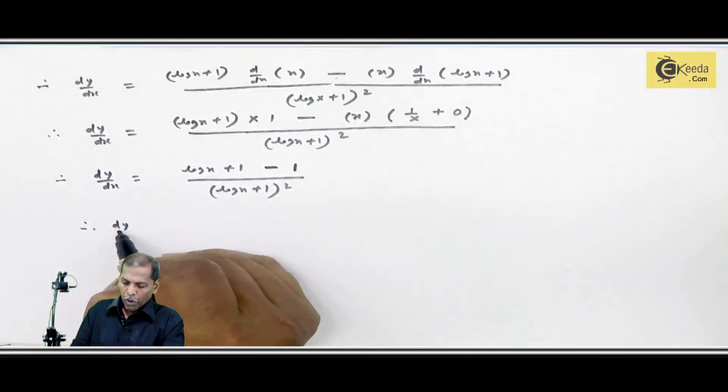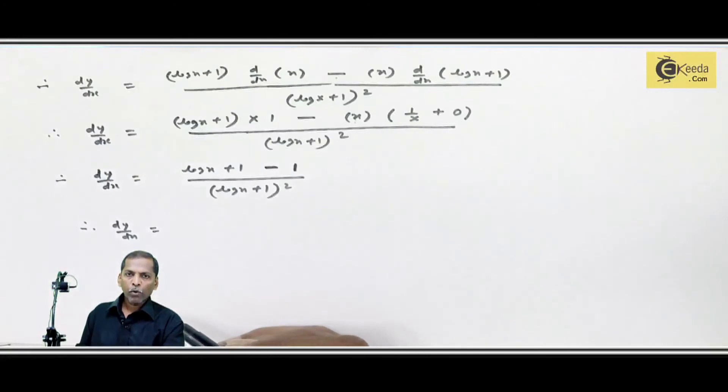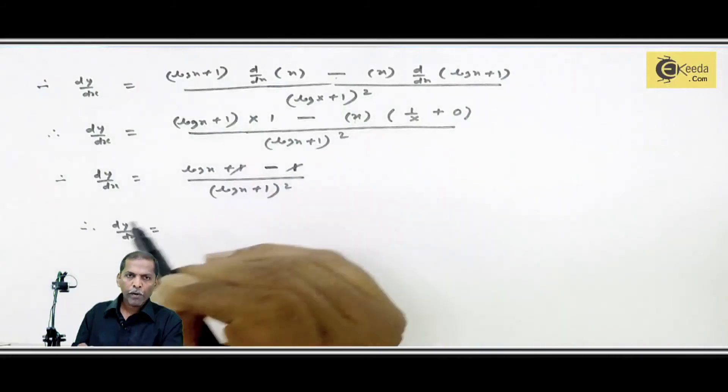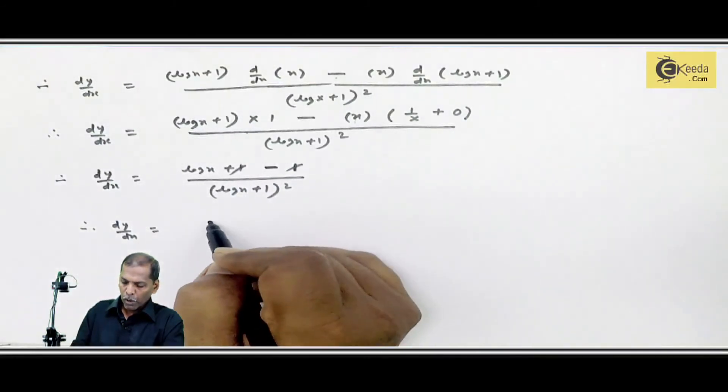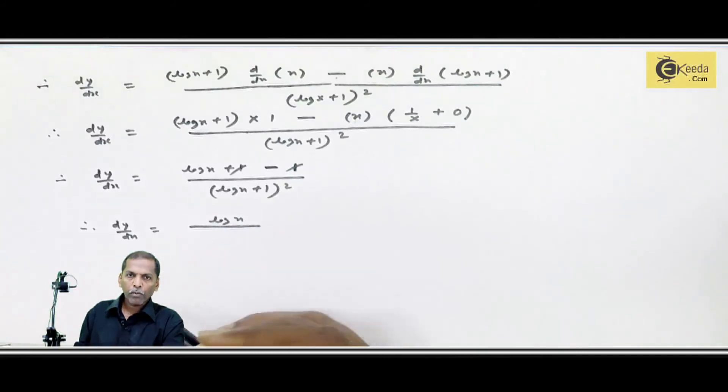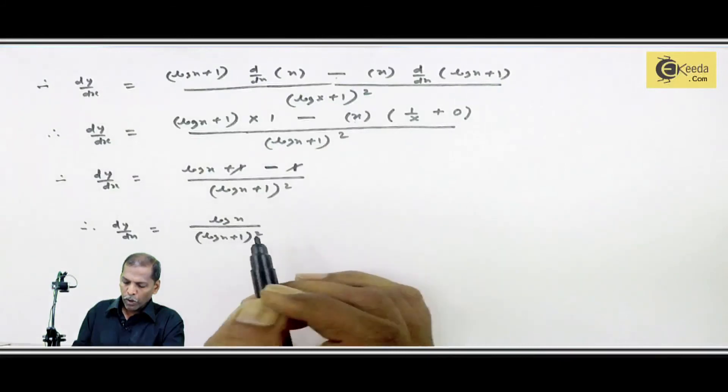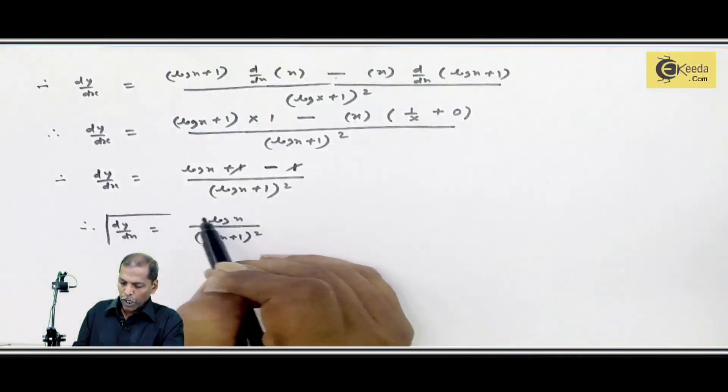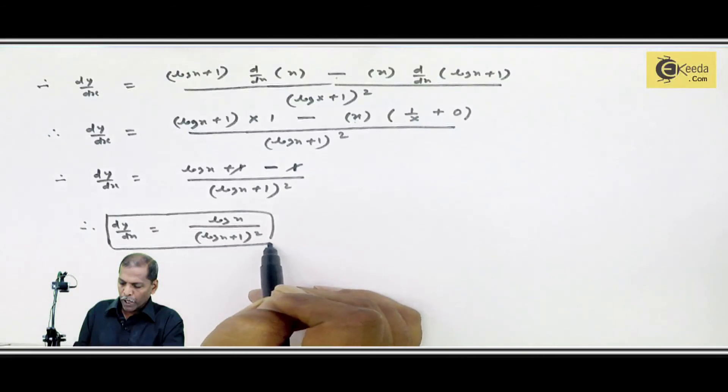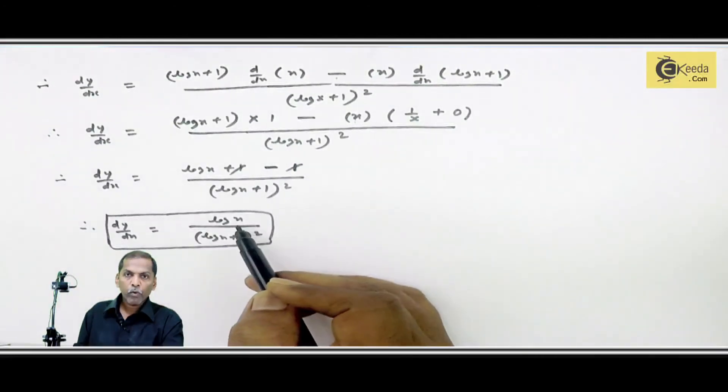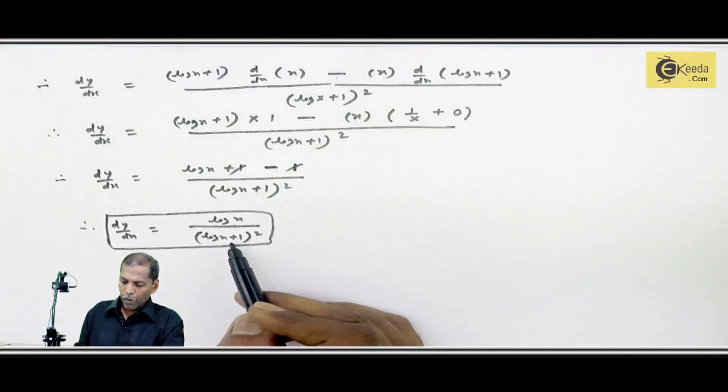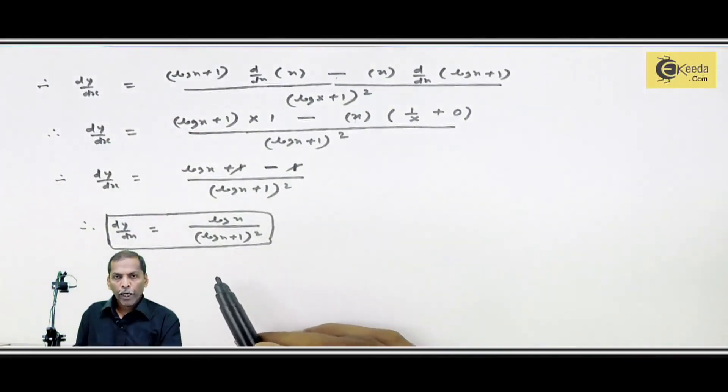If we observe, dy by dx, concentrating numerator, plus 1 minus 1 cancel from numerator. We left with log x upon log x plus 1 the whole square. This way we proved dy upon dx is equal to log x upon log x plus 1 bracket square. This was our question number 4 solution.